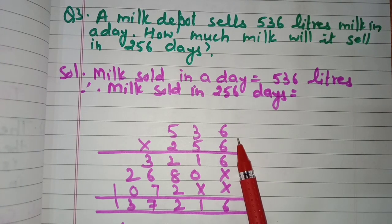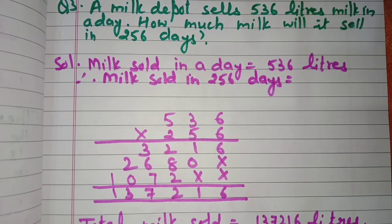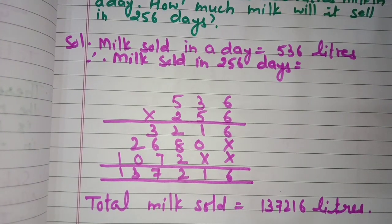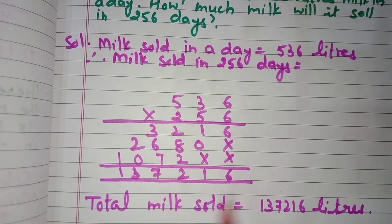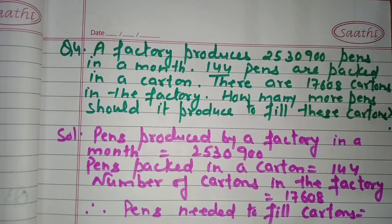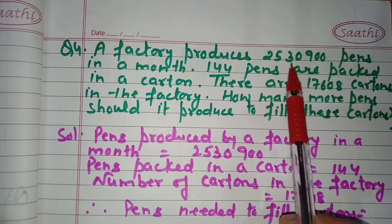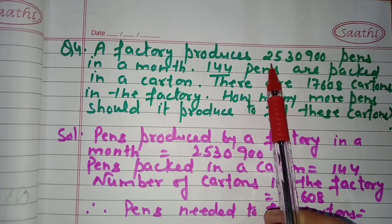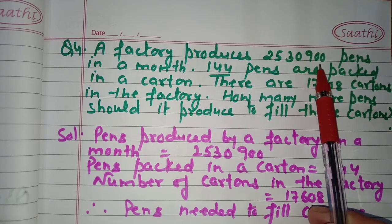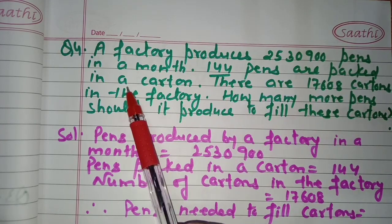Therefore, milk sold in 256 days — we multiply 536 by 256 and get 1,37,216 liters. So the total milk sold in 256 days is 1,37,216 liters.